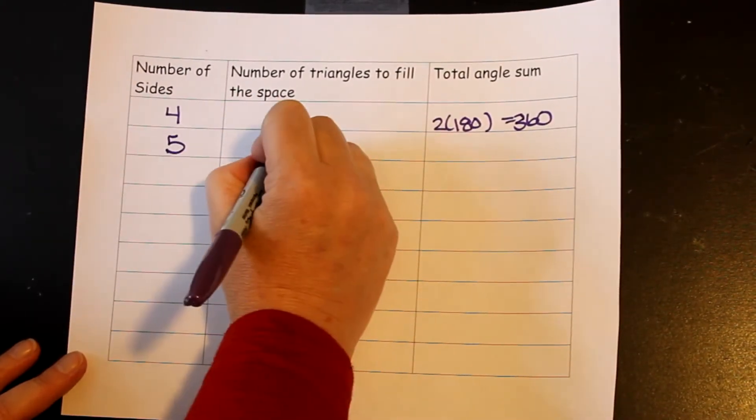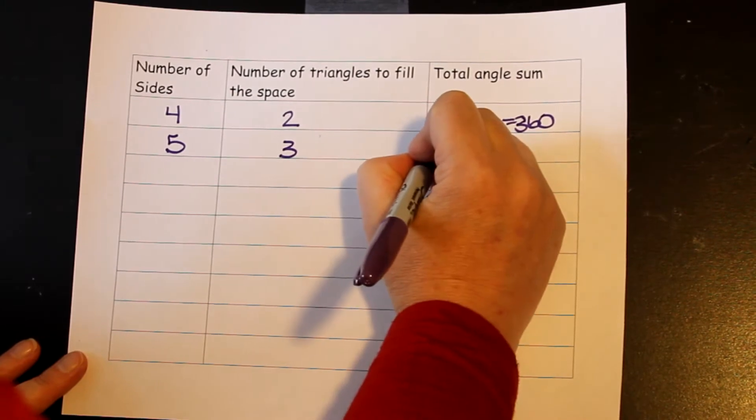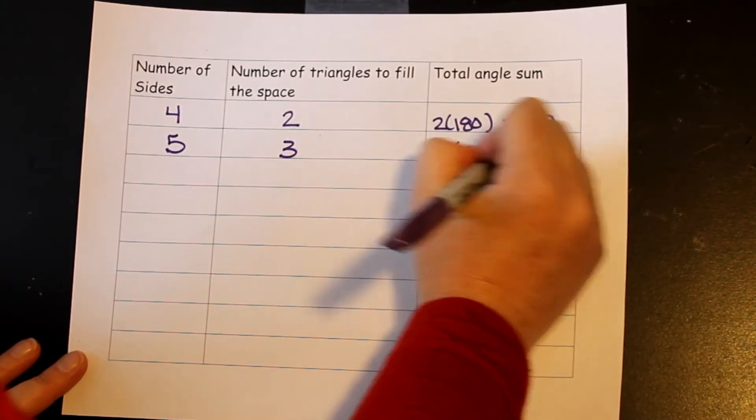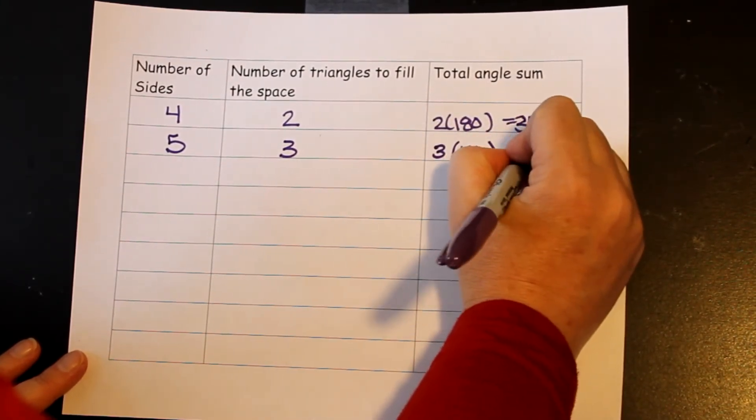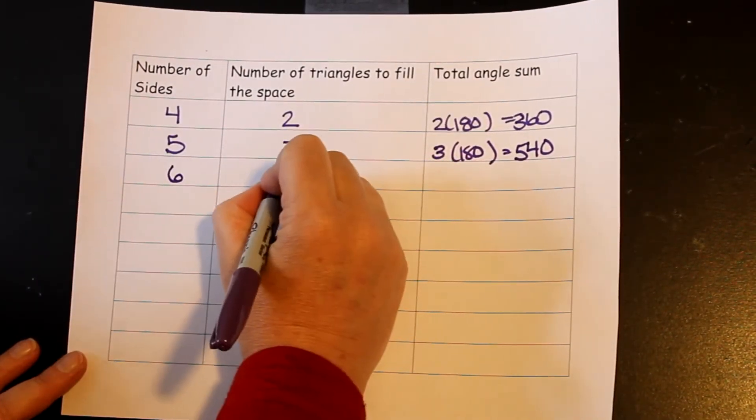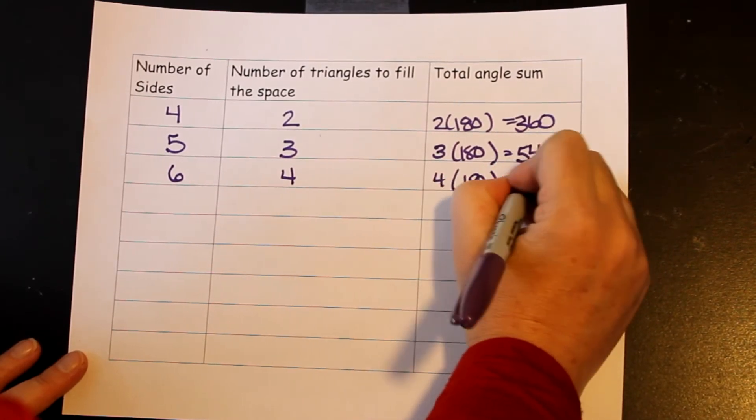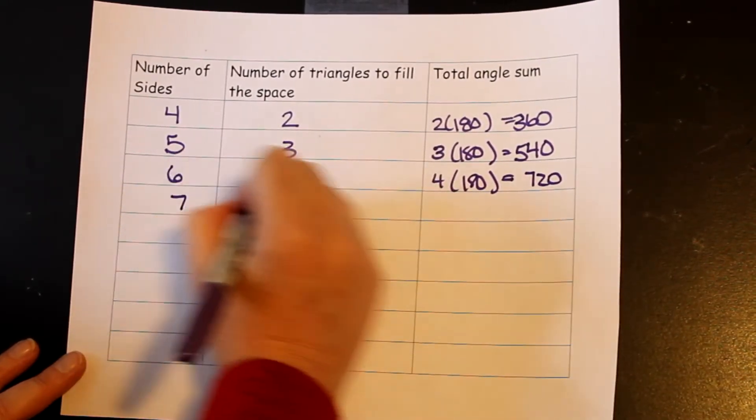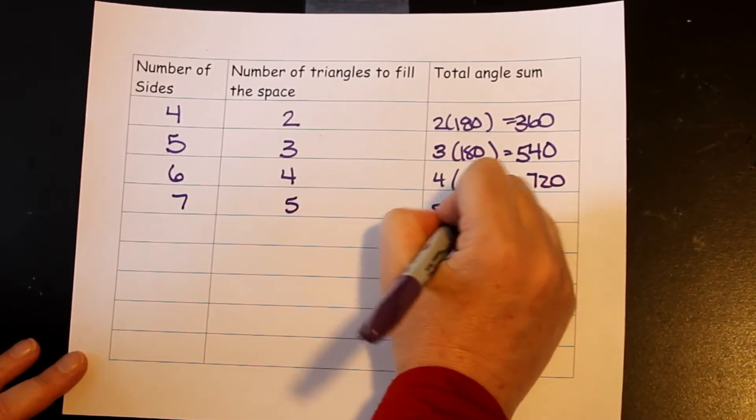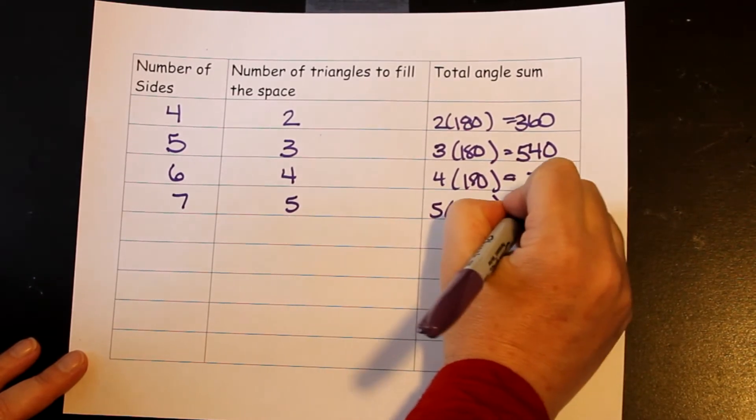For a pentagon, once again, 3 sides, and I get 3 times 180, which gives me my 540. And the same thing continues with my hexagon. There were four triangles in my hexagon, and that gave me 720. My heptagon had five triangles in it, and that gave me 900.